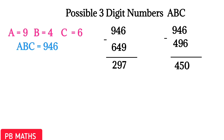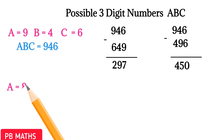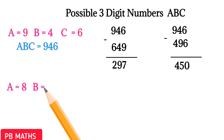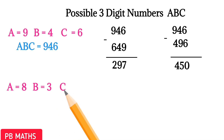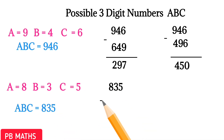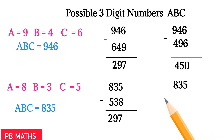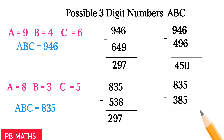In the second case, let's take A equals 8. Substituting A equals 8, B becomes 3 and C becomes 5. So 835 minus 538 gives 297, and 835 minus 385 gives 450. The condition satisfies here also.